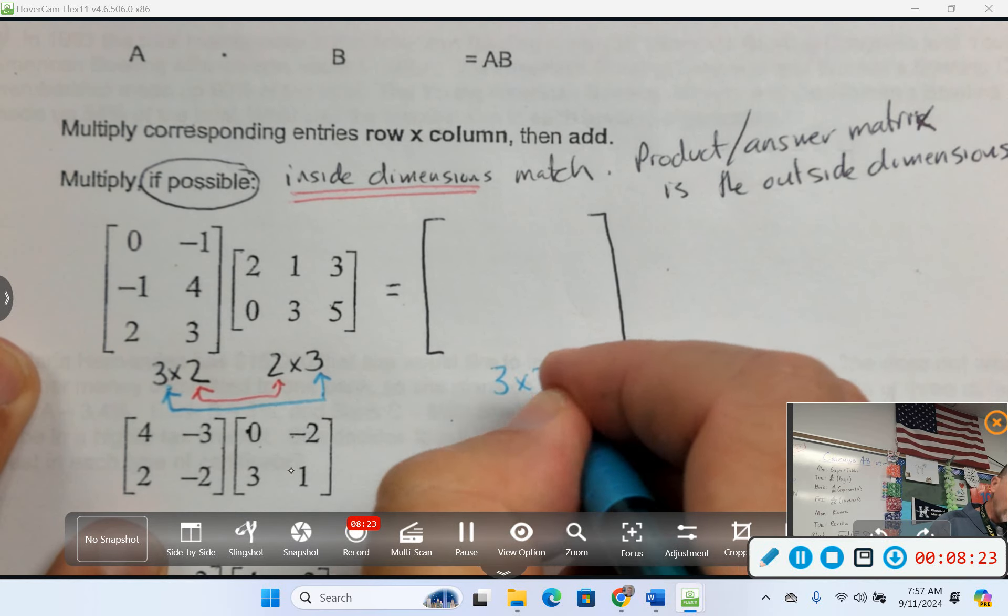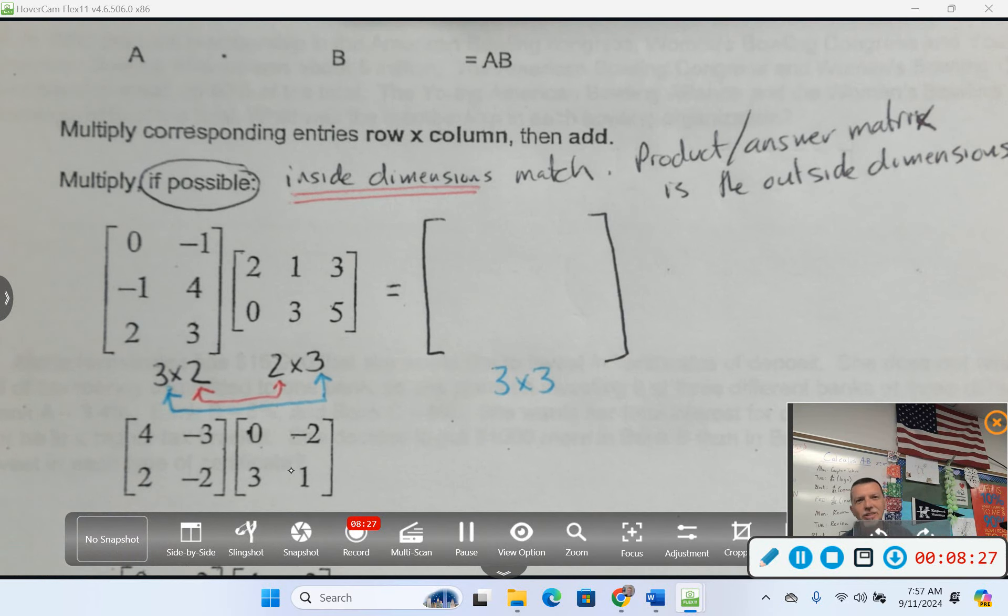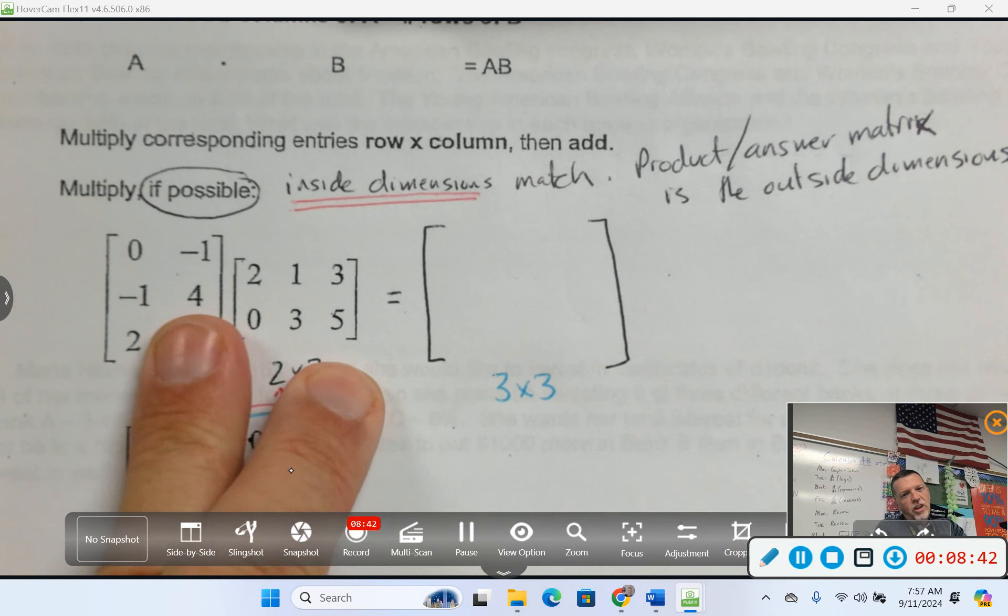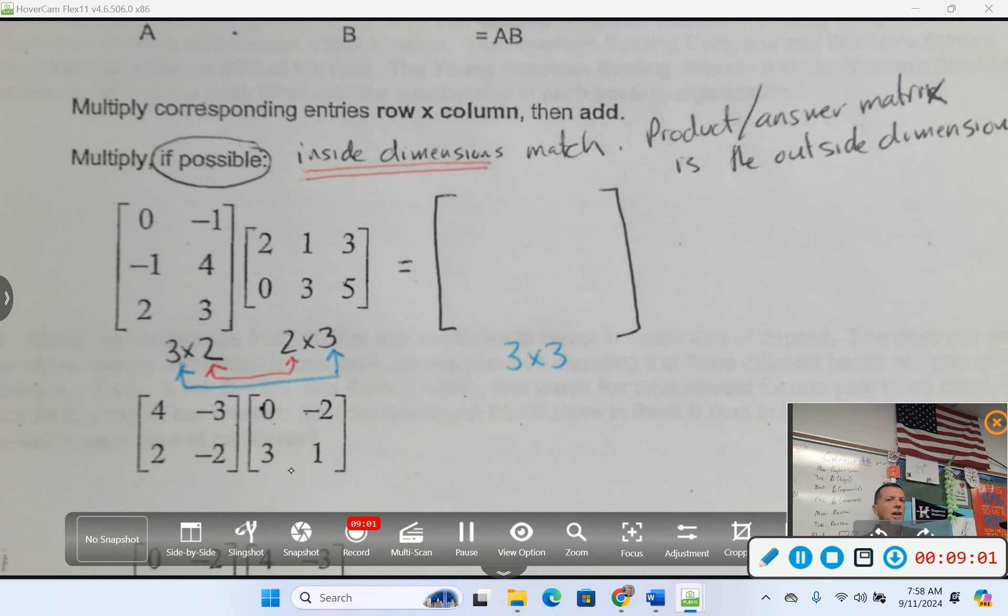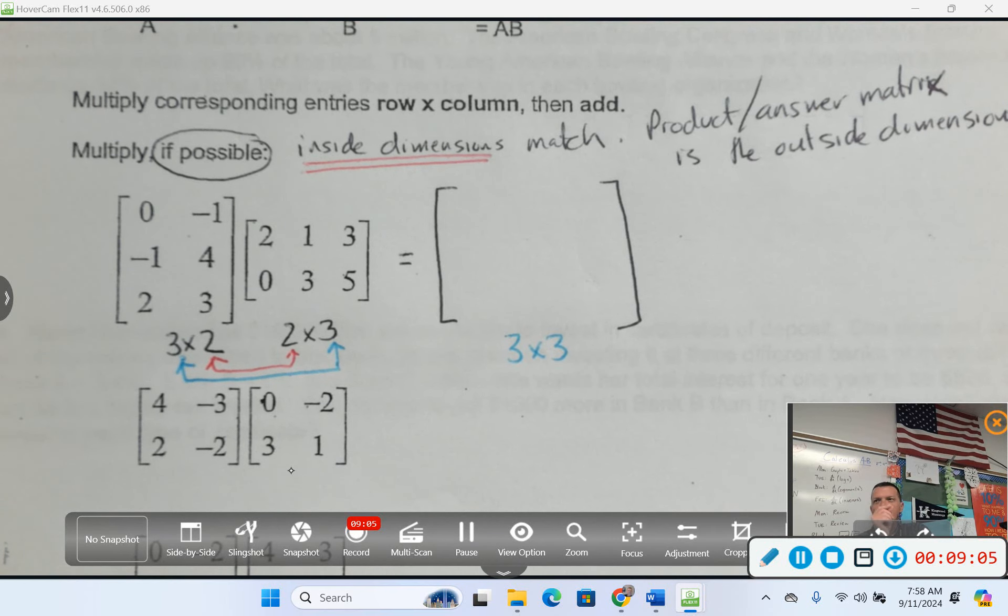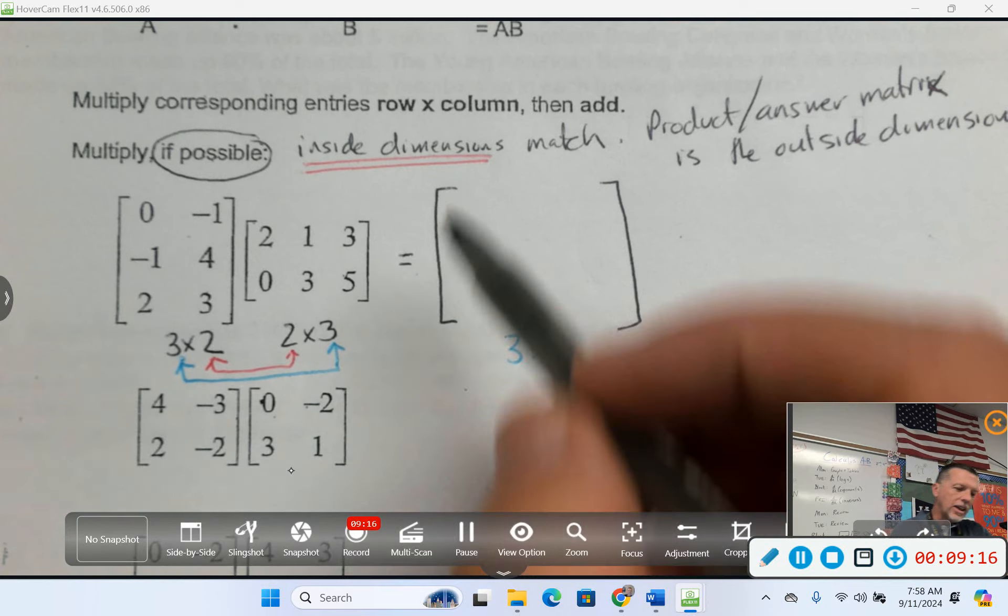The answer or the product matrix is the outside dimensions. So you're looking at the right things, the 3 and the 3. The answer for this one is going to be a 3 by 3 matrix. You're going to multiply a 3 by 2 and a 2 by 3, and the answer is going to blow up to a 3 by 3. What if I switch the order of those? The 3s would match, meaning you could do it, and your answer would be a 2 by 2. So the order definitely matters for matrix multiplication.